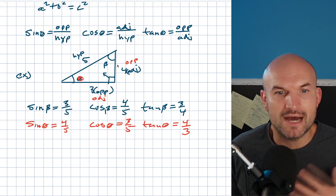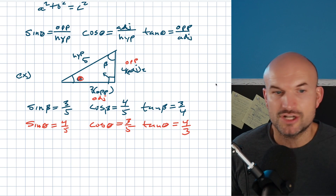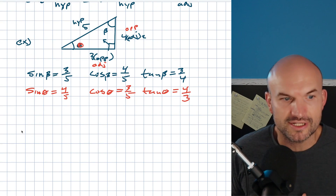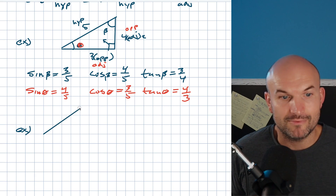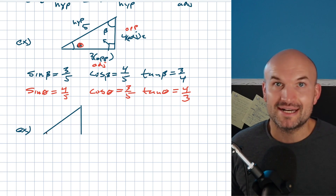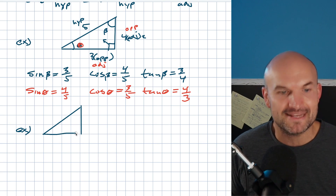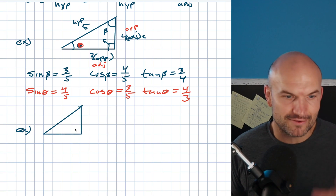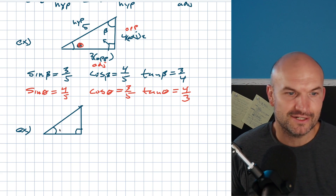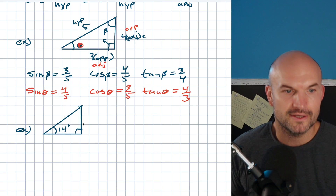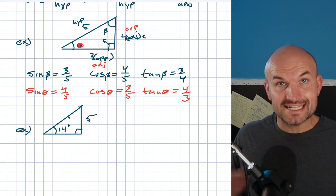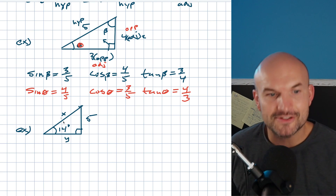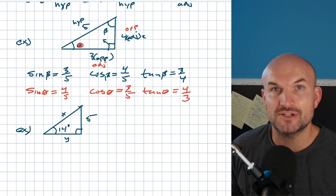So how can we actually use this information to solve for missing sides of a triangle? We have to have a right triangle — that's the main theme. Now, let's say this angle is 14 degrees and this side is 5. If we have an angle and a side length in a right triangle, we can now use our trigonometric ratios to solve for X and Y. That's what's so cool about this.